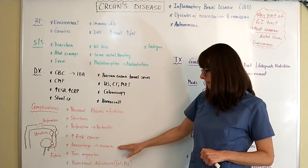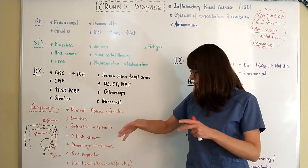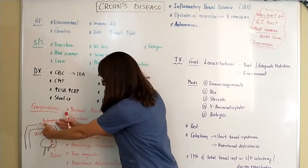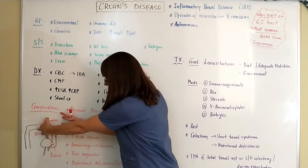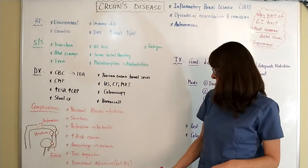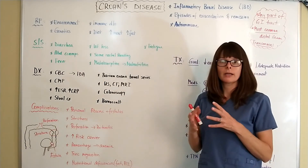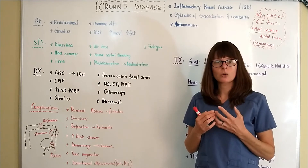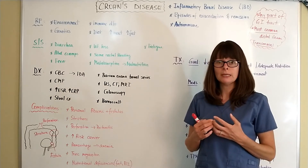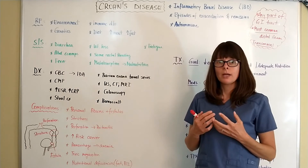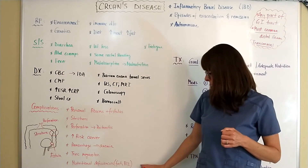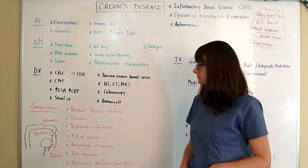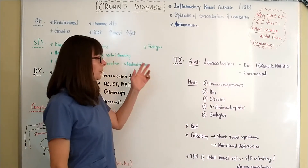Crohn's disease can lead to toxic megacolon, which is an abnormal dilation of the colon. If there is a stricture, stool backs up and the proximal end of the colon becomes very dilated, which can also lead to perforation. Since the digestive tract is so inflamed, it cannot properly absorb nutrients, leading to nutritional deficiencies — commonly fat, fat-soluble vitamins, and B12.